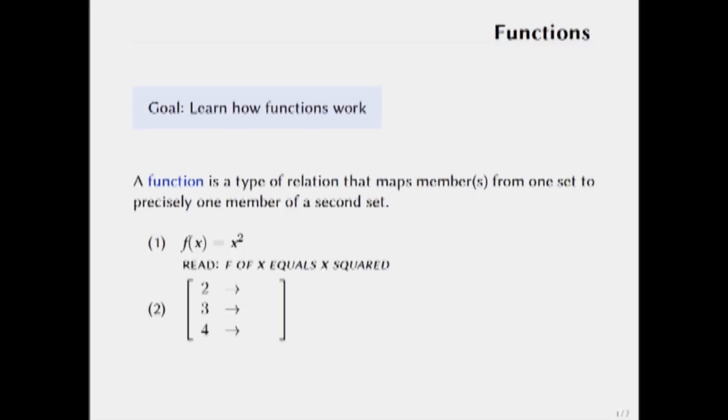So to take a very simple example from math, if a function f(x) equals x squared, then you'll take x and it will give you x squared. So if you give it 2 it gives you 4. You give it 3 it gives you 9. You give it 4 it gives you 16 and so on.